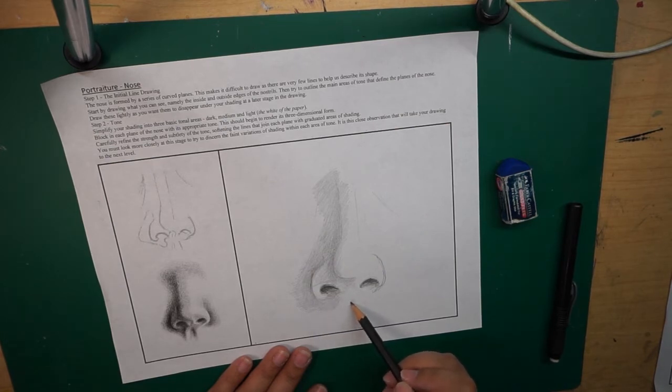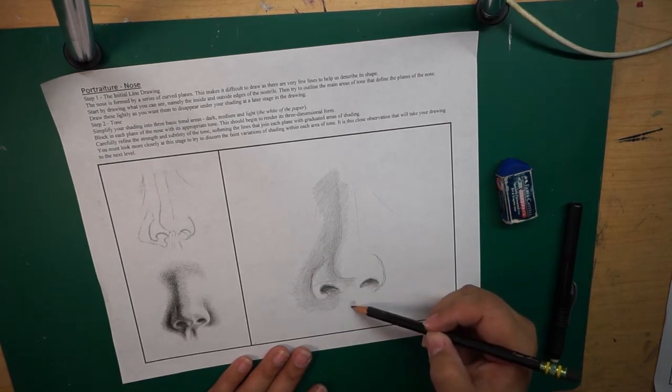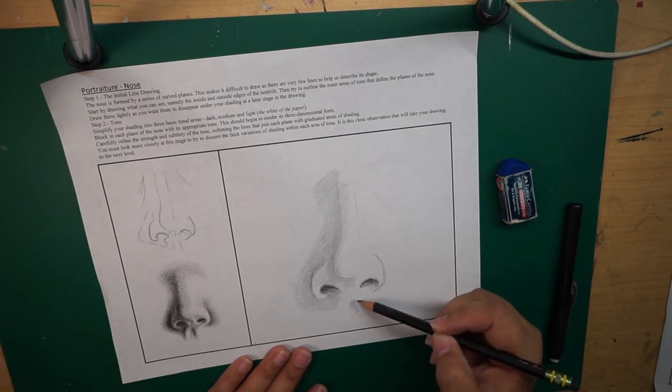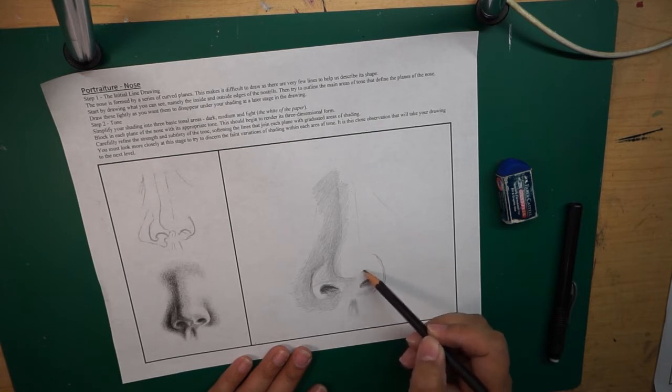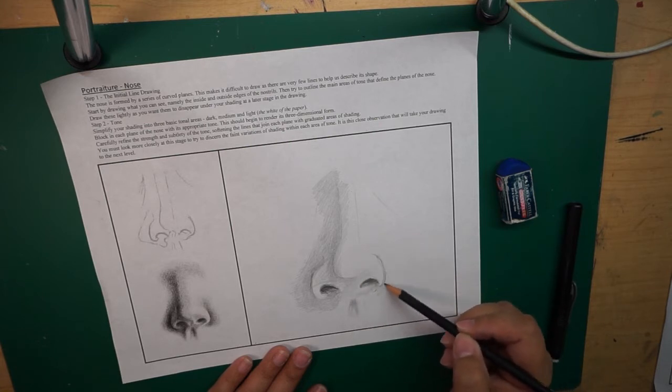Here I'm shading in the philtrum. It's right above the cupid's bow, it's underneath the septum but above the cupid's bow. And that part, just about everybody has a philtrum, but there's a little cleft, a little indention, so it does hold shadow whenever there's light coming from the side.